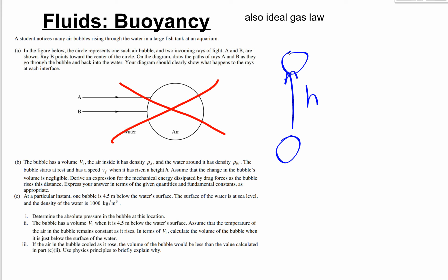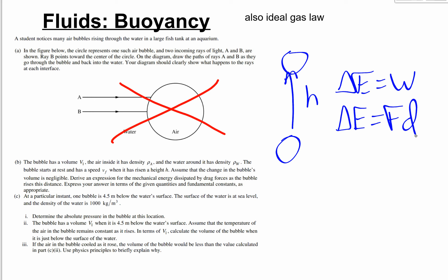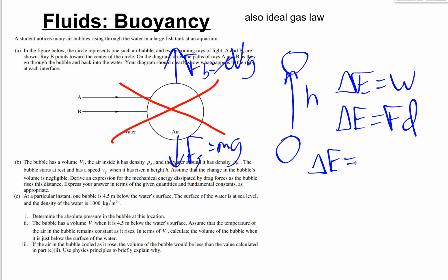Drag forces slow the bubble down. The question asks for mechanical energy dissipated by drag. Change in energy equals work, and work equals force times distance. The air bubble has gravity acting on it and buoyancy acting on it: fb equals rho·v·g and fg equals mg. So the change in energy equals (fb minus fg) — that's the net force — times h.